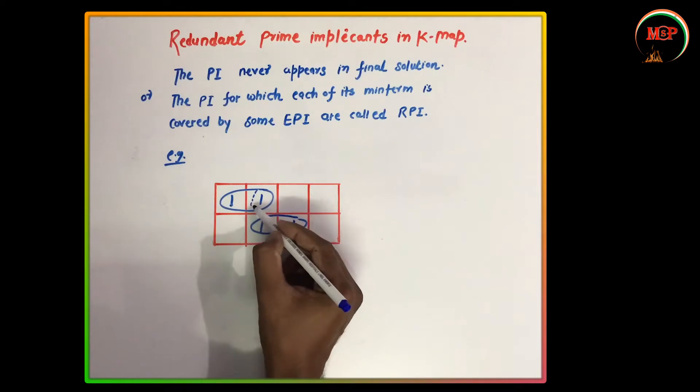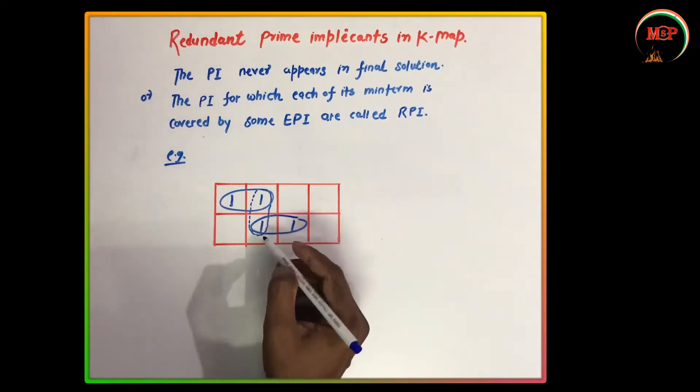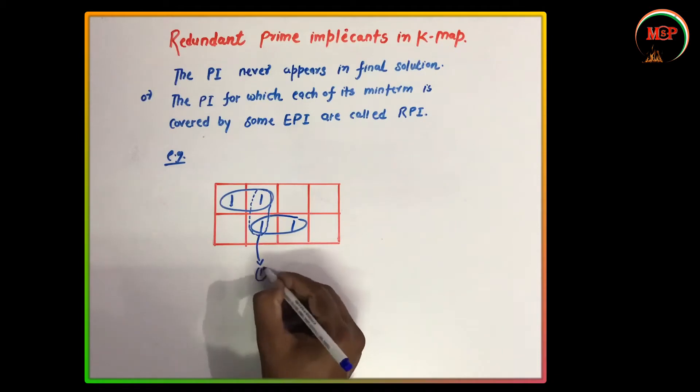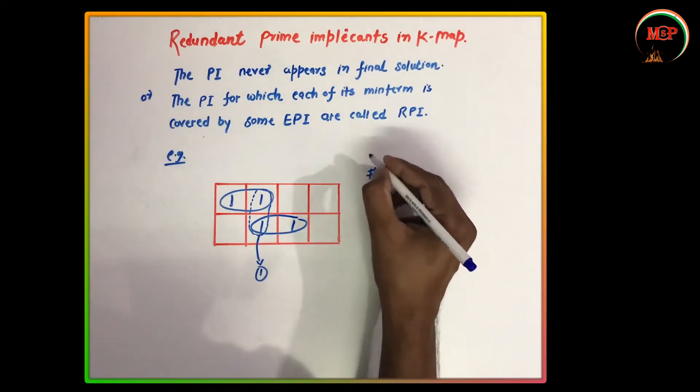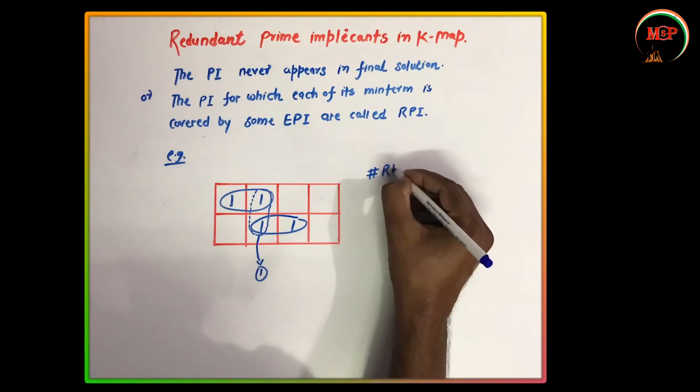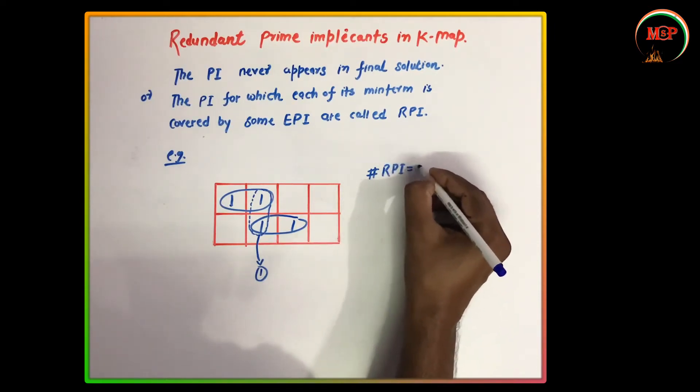Then the next step will be to create another pair. So what I had found - the number of RPI is equal to 1.